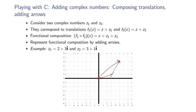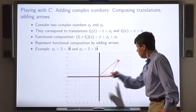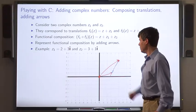So we see that addition of complex numbers can be represented by putting arrows together, adding them in this way.